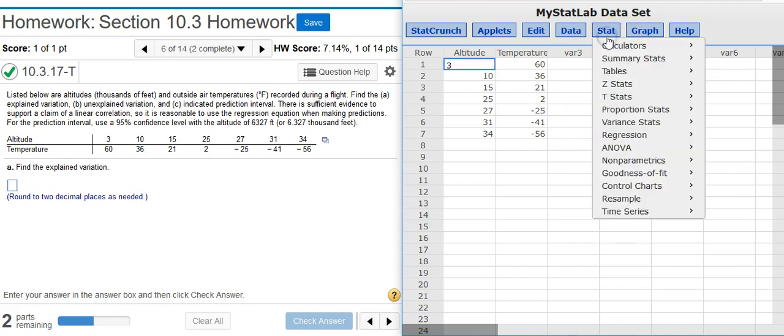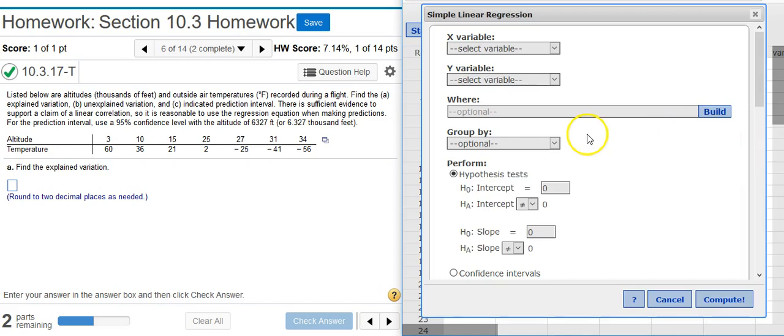So, I go up here to Stat, Regression, Simple Linear, because the problem statement said we have a claim of linear correlation that is supported. So, I'm going to select my X and Y variables, and press Compute.